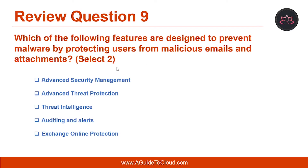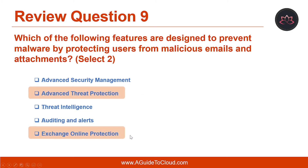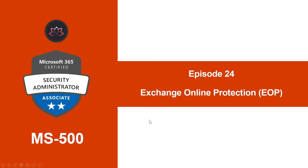Let's look at question number nine: which of the following features are designed to prevent malware by protecting users from malicious email and attachments? Select two. The answers are Advanced Threat Protection and Exchange Online Protection.